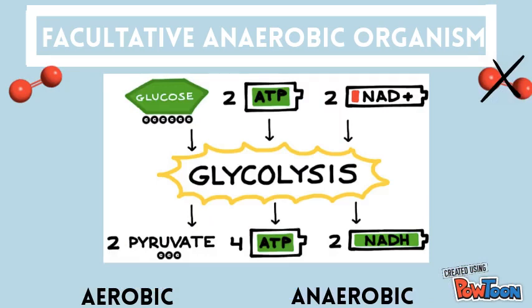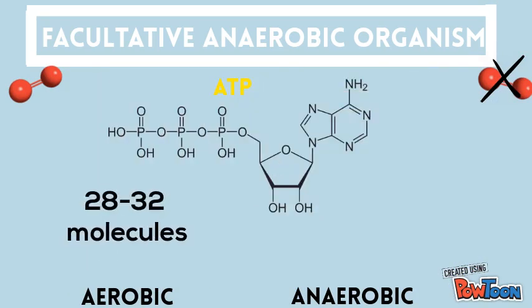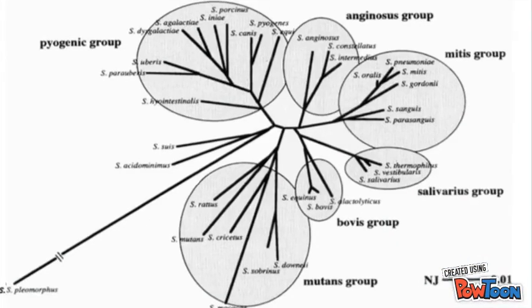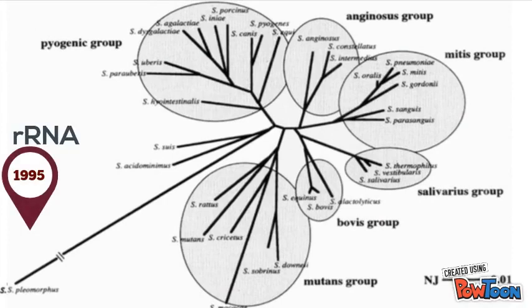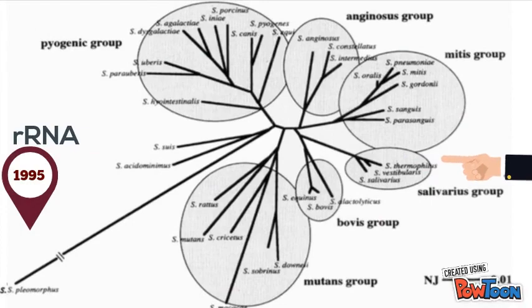Aerobic respiration produces 28 to 32 ATP molecules, while anaerobic produces 4 molecules. In a paper published in 1995, gene coding with RNA shows that S. thermophilis is closely related to S. vestibularis.